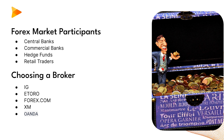One: IG — IG is a well-established broker that offers a user-friendly platform, tight spreads, and a wide range of markets to trade. They are regulated by multiple financial authorities. Two: eToro — eToro is known for its social trading platform, allowing users to copy the trades of successful traders. They offer a variety of financial instruments including forex, stocks, and cryptocurrencies, and eToro is regulated.